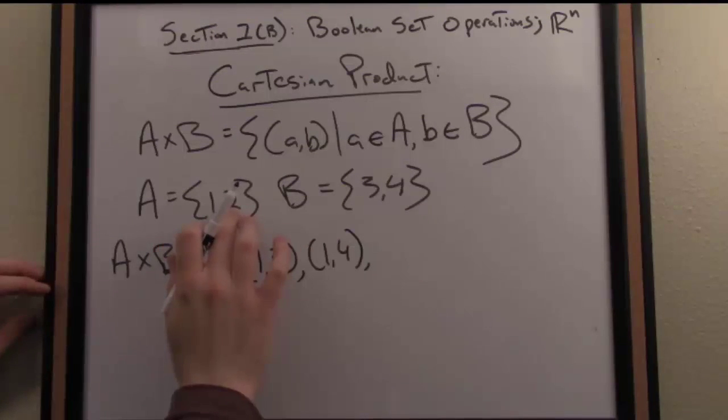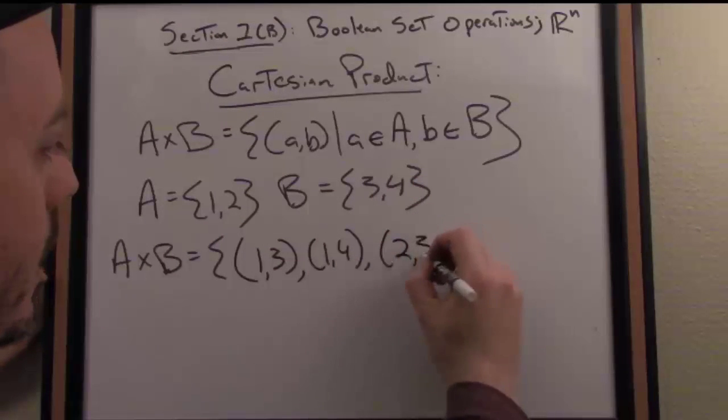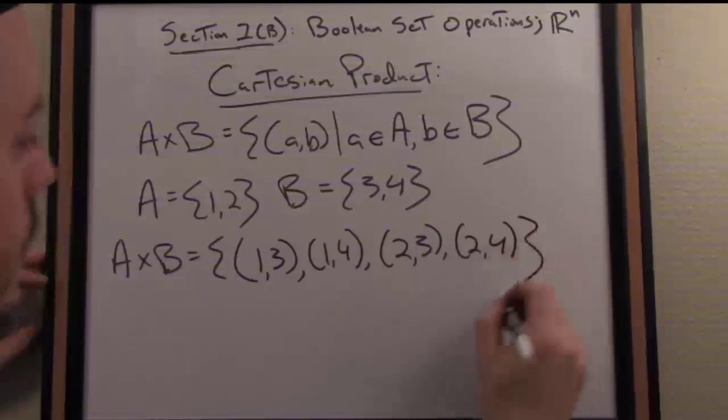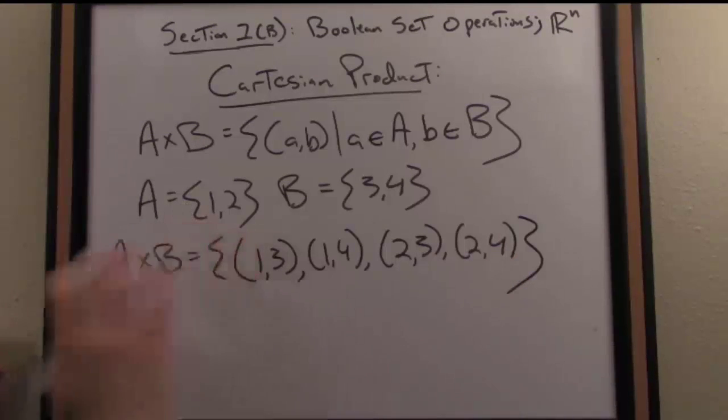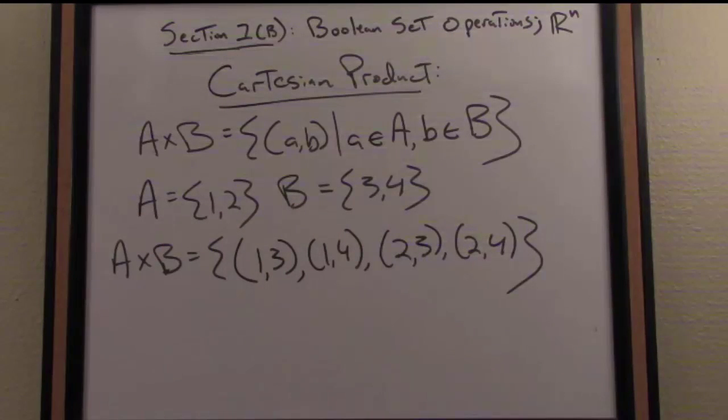Now that I've exhausted one, I move on to the next element from A and that is two. So two can similarly be paired with three and two can also be paired with four. So notice the size, it's sometimes called the cardinality of set A is two. There are two elements in it. The size of set B is also two and the size of the Cartesian product is two times two, four elements altogether.